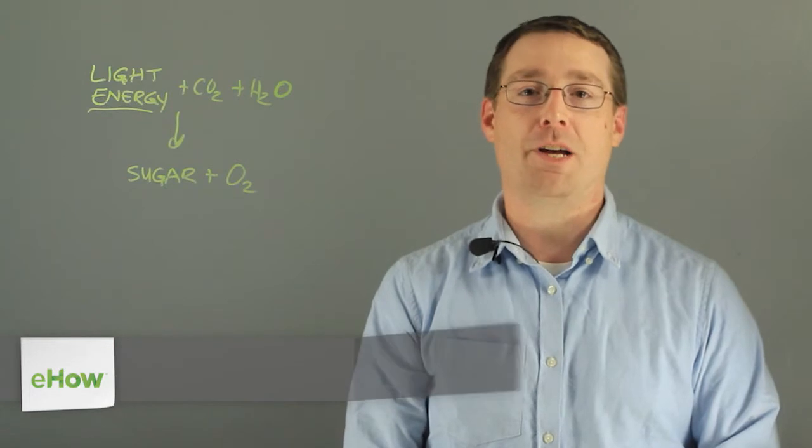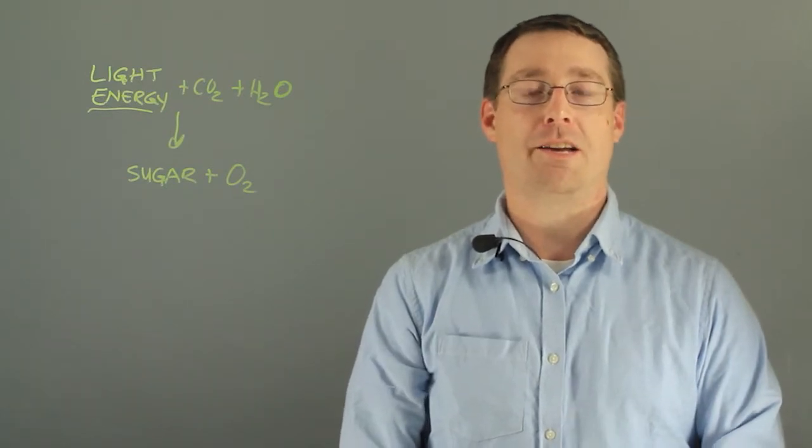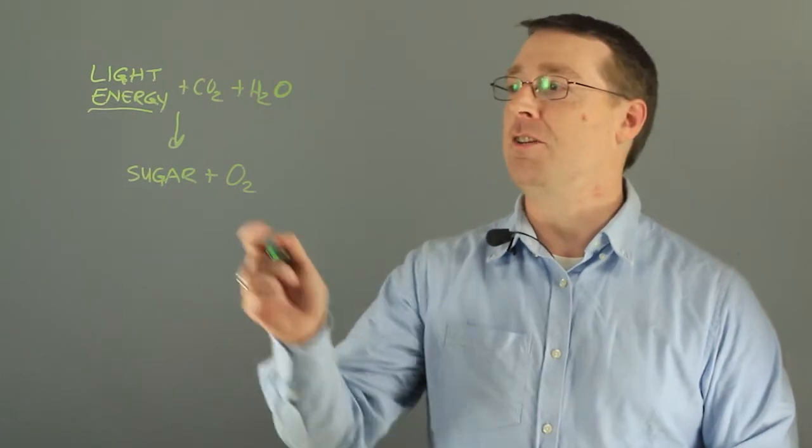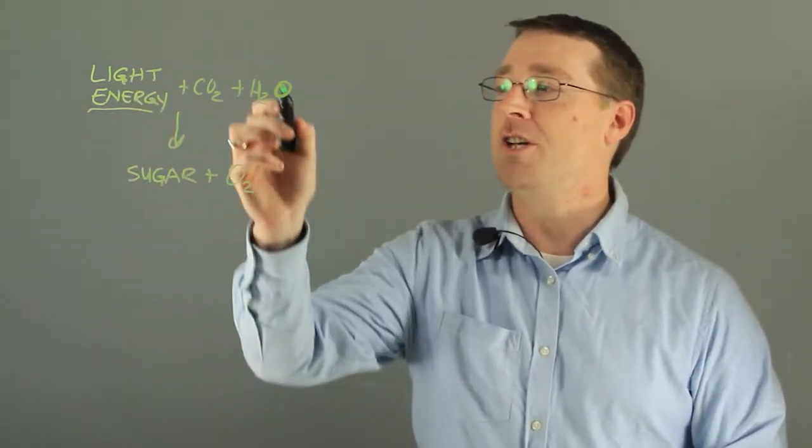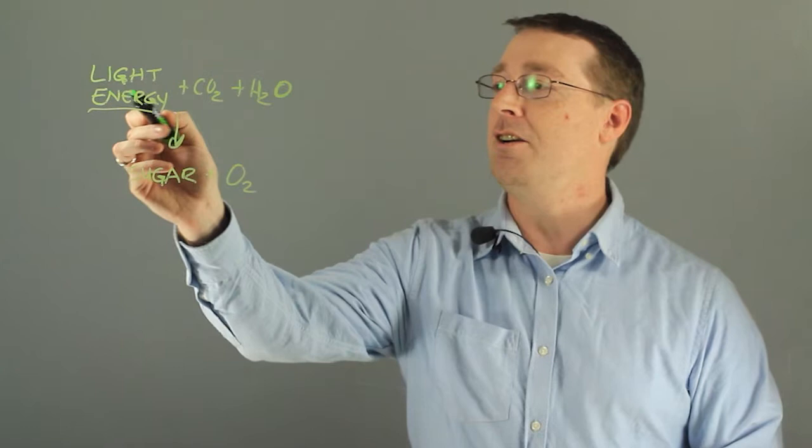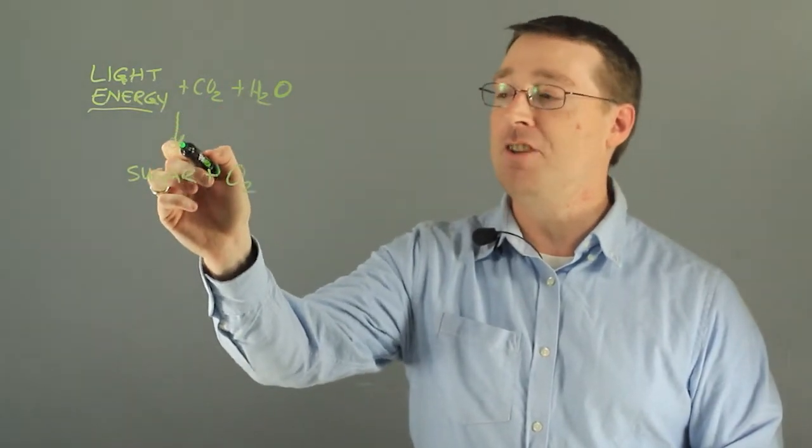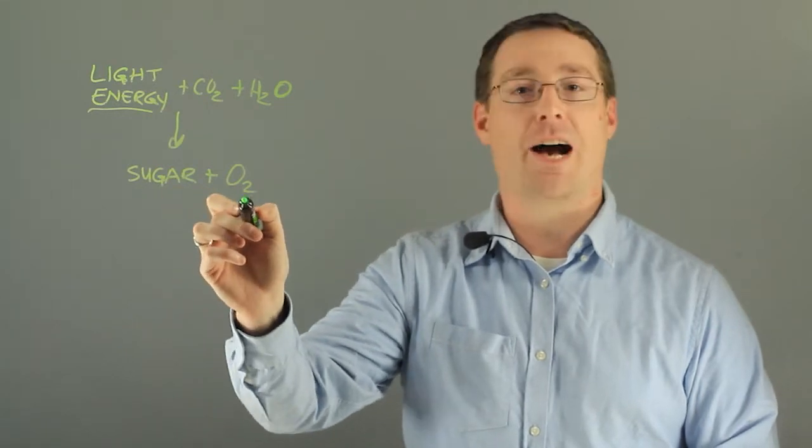Photosynthesis is a complex biochemical pathway involving several chemical reactions. However, we can break it down into this simple equation here in which light energy, CO2, and water inside plant cells is eventually converted into sugar and oxygen.